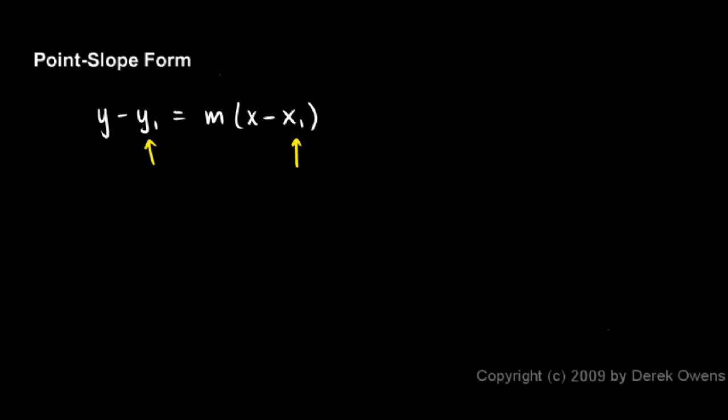Sometimes we have a point at x1, y1, and we have the slope of a line that goes through that point. In that case, we can find the equation of the line with this formula.